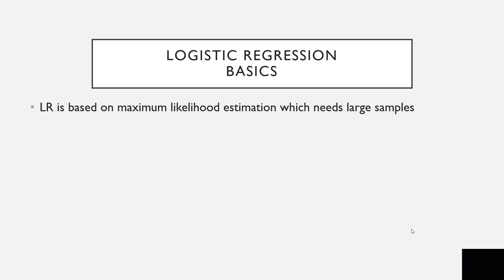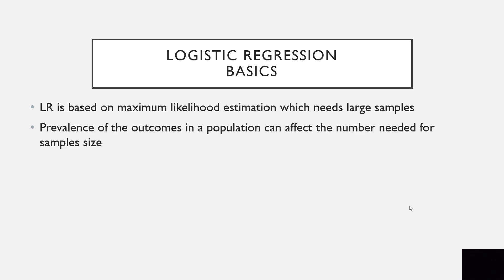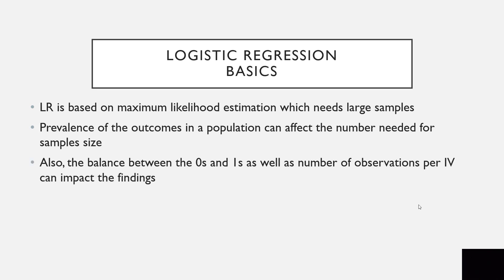Logistic regression is based on maximum likelihood estimation, which requires large samples. Prevalence of outcomes in a population can affect the required sample size. Also, the balance between zeros and ones, as well as the number of observations per independent variable, can impact the findings.